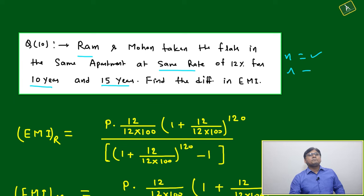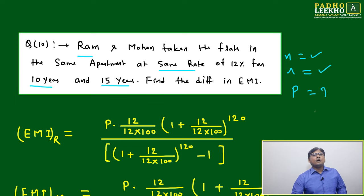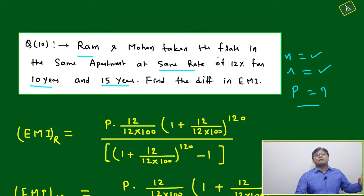The same rate is there, same tenure is there, that is well and good. Rate is same, but another thing is also required: how much has he taken? The loan amount is not given. It is given flats in same apartment, which apartment, which flat we don't know. What is the principal amount? How much loan has he taken?